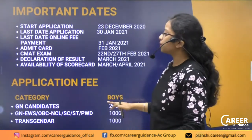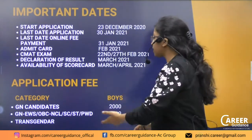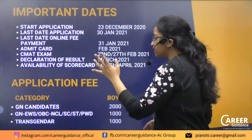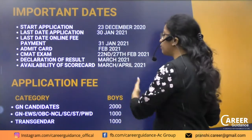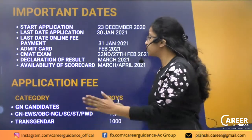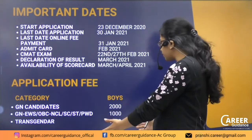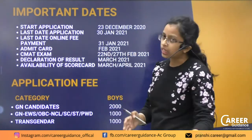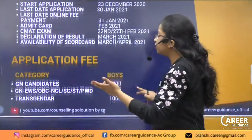If you talk about the application fee, the fee for the General category is ₹2,000. For females, it is ₹1,000. EWS, OBC, SC, and ST candidates also pay ₹1,000. Girls pay ₹1,000, and the transgender fee is also applicable at the same rate.